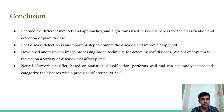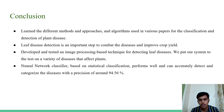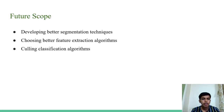Conclusion. We learned different methods, approaches, and algorithms used in various papers for classification and detection of plant disease. Leaf disease detection is an important step to combat diseases and improve crop yield. We developed and tested an image processing-based technique for detecting leaf diseases, put our system to the test on a variety of diseases, and the neural network classifier achieved a precision of 94.56%. Future scope: by developing better segmentation techniques, choosing better feature extraction algorithms, and refining classification algorithms, we can build a more accurate model to be deployed and used by all farmers at an affordable rate.